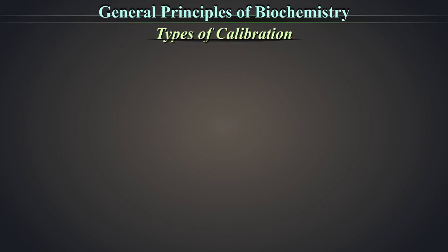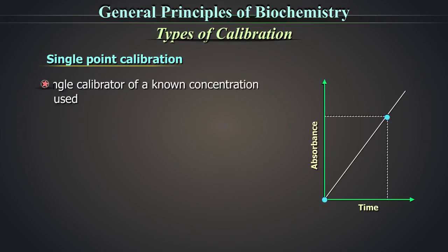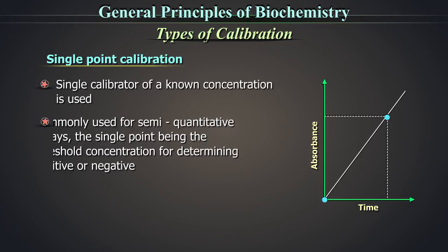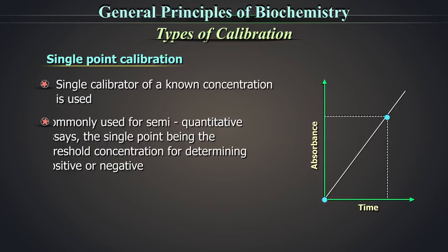Types of calibrations. Single point calibration: A single calibrator of a known concentration is used. This is commonly used for semi-quantitative assays, the single point being the threshold concentration for determining whether it is positive or negative.